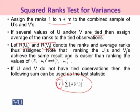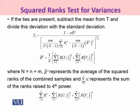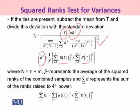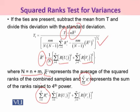After squaring and summing over the ranks column, we get the value of T as the test statistic. When ties are present in both samples, we calculate T₁ as T minus n·R̄² divided by the standard error, where R̄² is the sum of the squared ranks divided by capital N (total sample size = n + m). The term Σrᵢ⁴ represents the sum of the ranks raised to the fourth power.